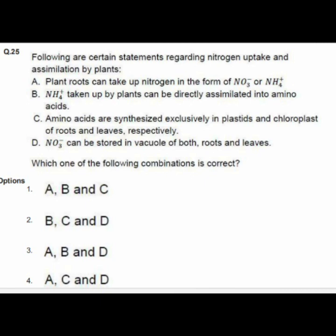Question 25 gives statements regarding nitrogen uptake and assimilation by plants. The correct combination is option 3: A — plant roots can take up nitrogen as NO3- or NH4+; B — NH4+ taken up by plants can be directly assimilated into amino acids; D — NO3- can be stored in vacuoles of both roots and leaves.